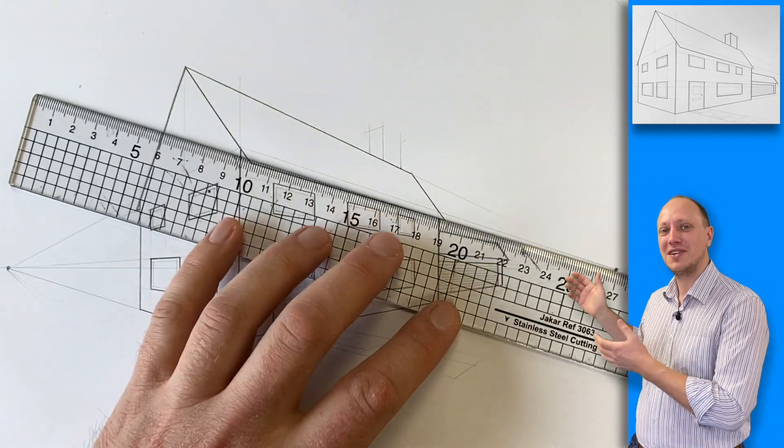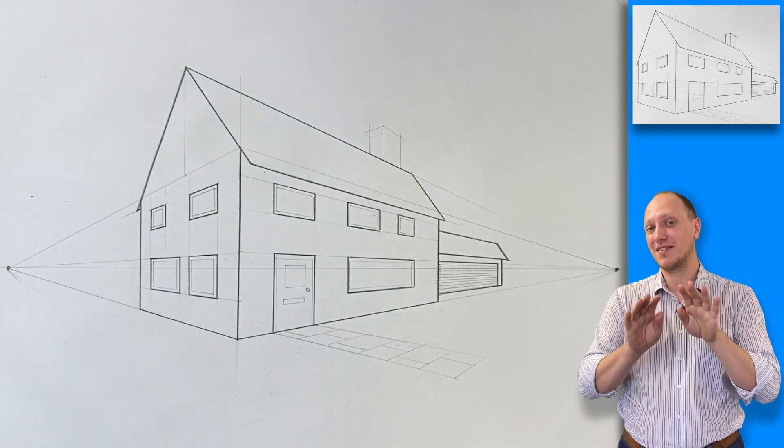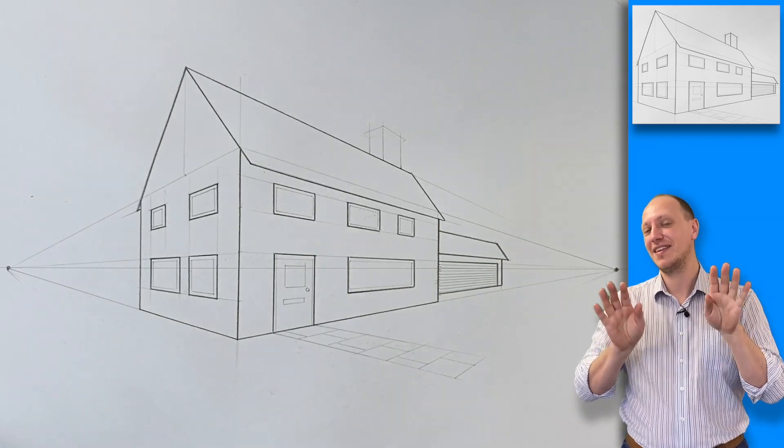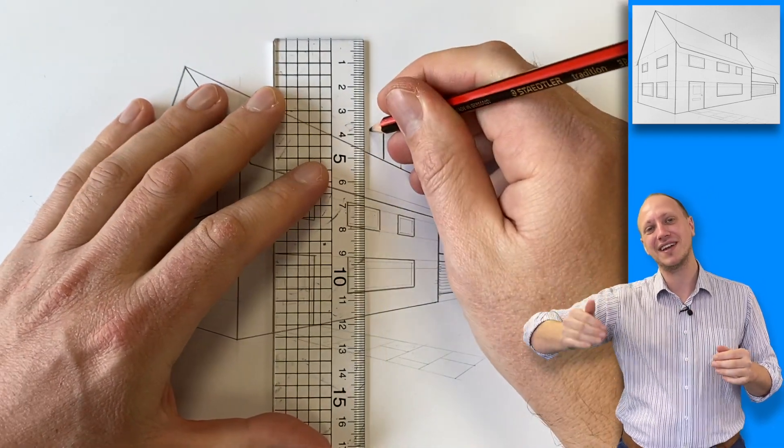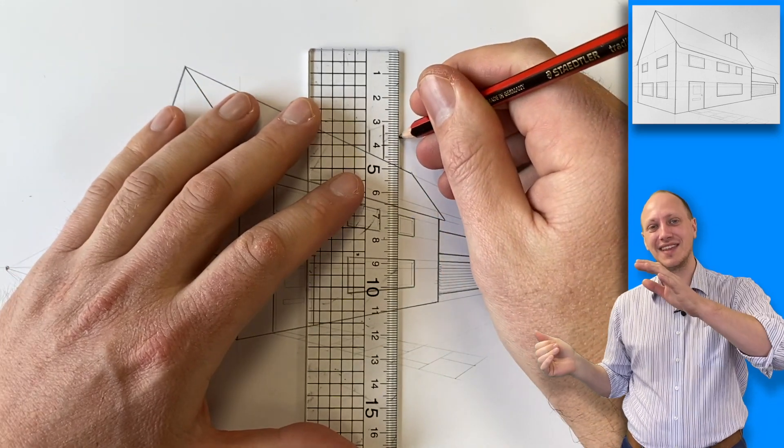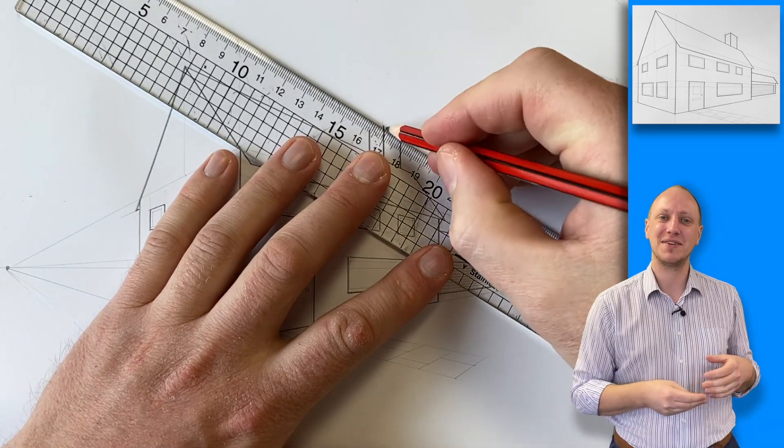I'm going to finish this one off with a chimney. Three lines coming up from my roof. I'm going to put it on the back of my roof because I've already drawn the front face. This way it can tuck in behind there. Three lines coming up. One side goes off to the right vanishing point. The other side goes off to the left vanishing point. And then we're complete on our house. And this is task done for today.